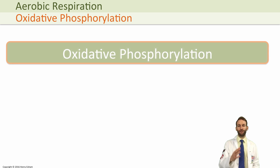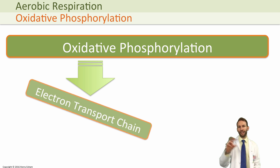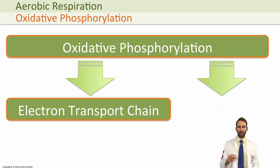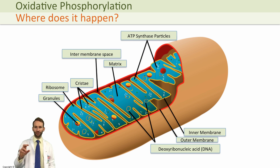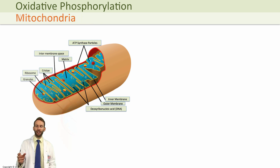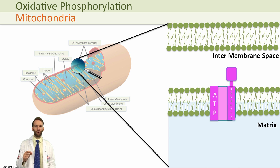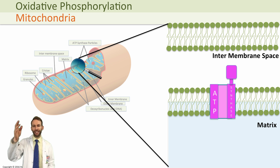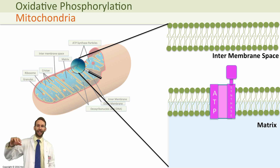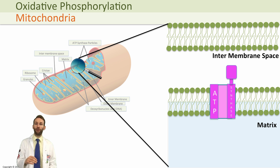Oxidative phosphorylation actually involves two processes: the electron transport chain, followed by something called chemiosmosis. Both of these reactions happen on the inner membrane of the mitochondria. The inner membrane is covered in special enzymes called ATPase enzymes, which are required for this process. It is therefore highly folded to give a large surface area so we can fit as many of these enzymes in as possible and have as many reactions happening in quite a small volume in the mitochondria.